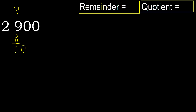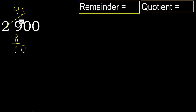Next: 10. 2 multiplied by 5 is 10; 10 is not greater. 10 minus 10 is 0.